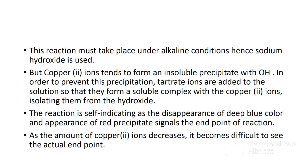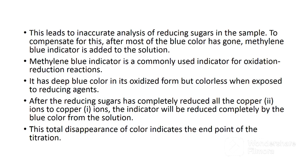The reaction is self-indicating, as the disappearance of the deep blue color and appearance of the red precipitate signals the end point. However, as the amount of copper(II) ions decreases, it becomes difficult to see the actual end point, leading to inaccurate results. To compensate, after most of the blue color has gone, methylene blue indicator is added. Methylene blue has a deep blue color in its oxidized form but becomes colorless when exposed to reducing agents. After the reducing sugars have completely reduced all copper(II) ions, the indicator is reduced completely, removing the blue color — this total disappearance of blue signals the end point.